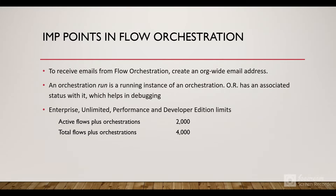For important points: to receive emails from Flow Orchestration for interactive steps, you must create an org-wide email address. An orchestration run is a running instance of an orchestration with a status — such as in progress or completed — which helps in debugging. The active flows plus orchestration limit is 2,000, and the total flows plus orchestrations limit (active or inactive) is 4,000.